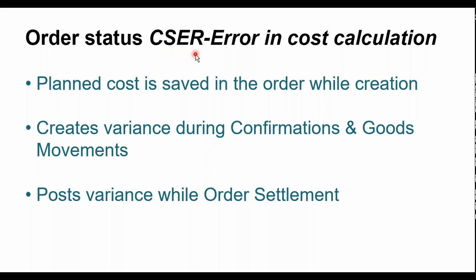This means a lot for the costing team because they would end up seeing variances when comparing plan versus actual values if there is an error recorded while creating the process order or production order. During the creation process you would see an information message saying there is an error in the cost calculation, asking whether you'd like to save the order. Once you click continue, the system status CSCR gets updated into the order. From the production point of view it's not going to stop or harm production activities, but when we talk about costing activities, it would create a huge impact.